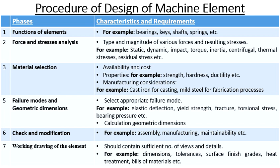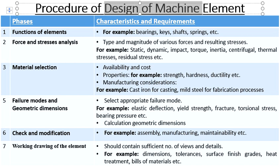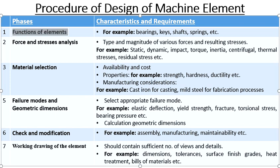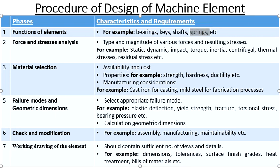The next step is the procedure for design of a machine element. The design of an individual component and assembly is now discussed in detail. The design of a machine element may be divided into a number of phases. The first phase involves identifying the functions of elements — for example, we may need to use bearings at certain points, keys for shafts and pulleys, shafts for power transmission, and springs. There are a number of elements which we have to finalize for the particular application.